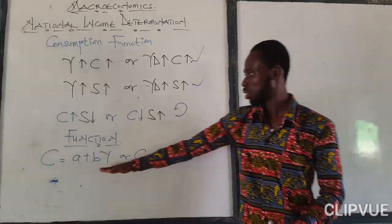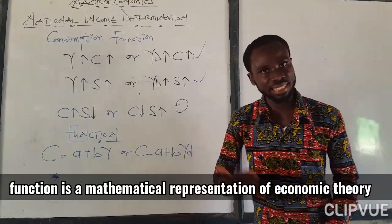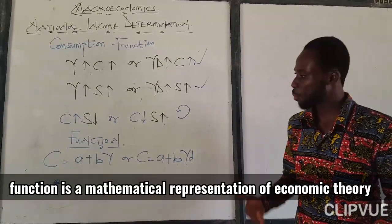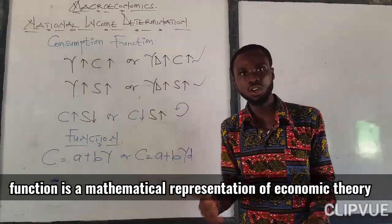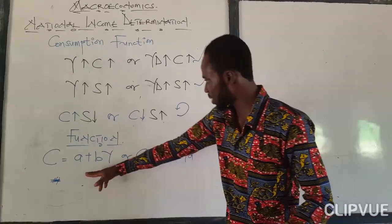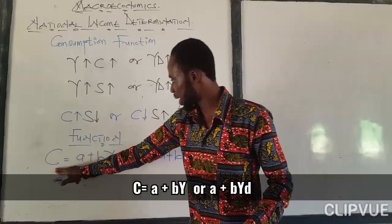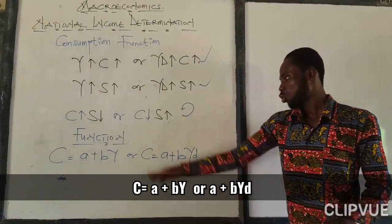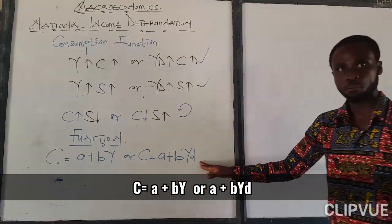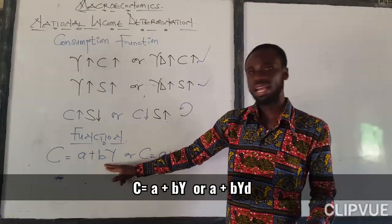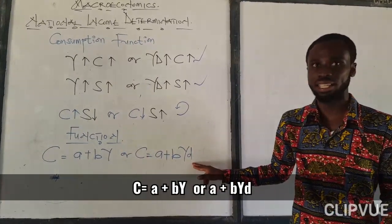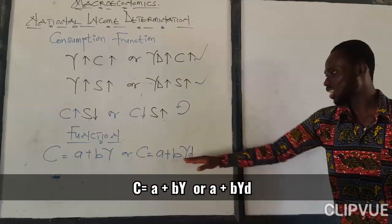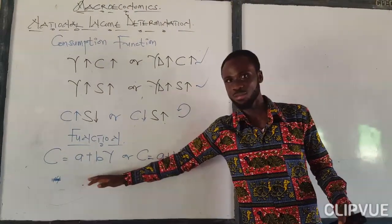Let's come to the consumption function. A function is a mathematical expression of economic theory. The consumption function is: Consumption equals A plus BY, where Y is income or disposable income. That is basically the formula for consumption.